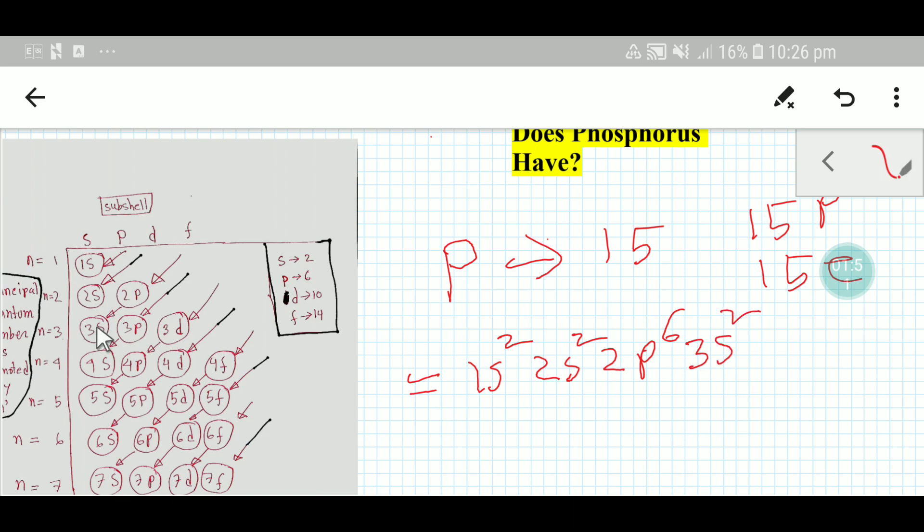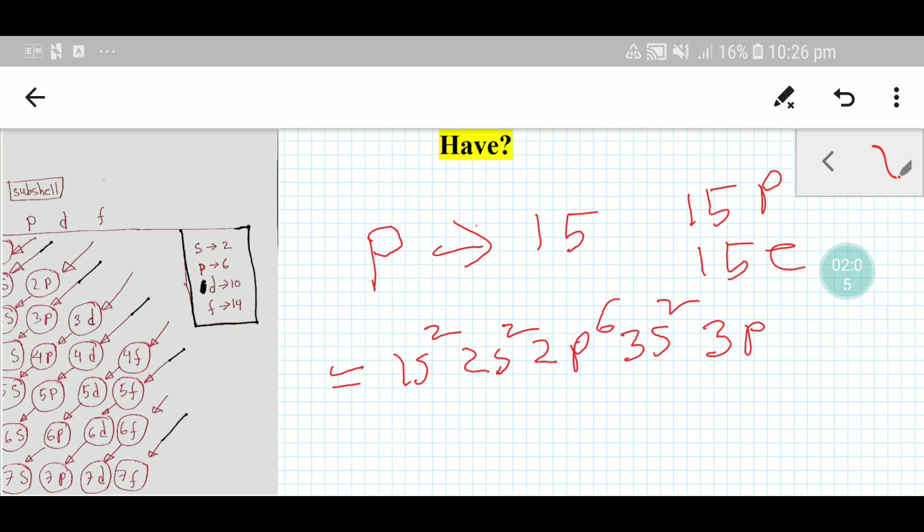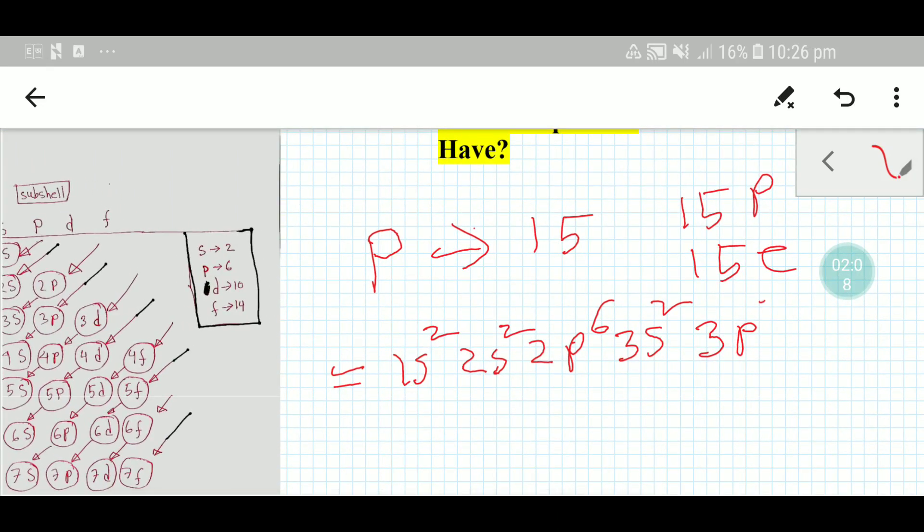Then 3s². We need to add 6 plus 2 is 8, plus 2 is 10, plus 2 is 12. After 3s, we need to consider 3p. So in 3p we can put 3. This means 3 plus 2 is 5, plus 6 is 11, plus 2 is 13, plus 2 is 15.